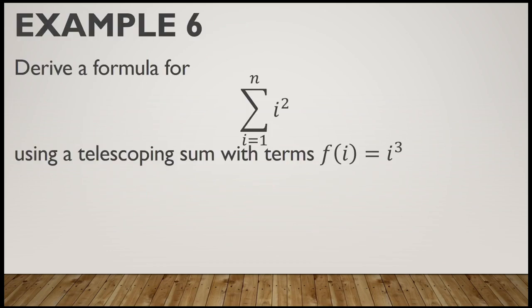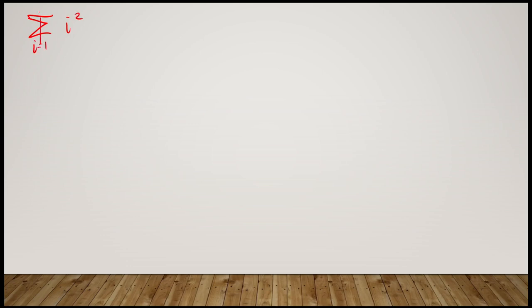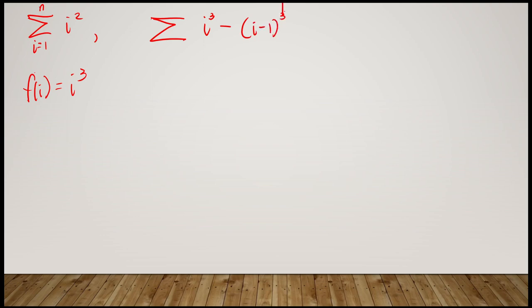Our next example: derive a formula for the summation of i-squared from i equals 1 to n, using a telescoping sum with terms f(i) equals i-cubed. Using the telescoping sum with f(i) = i³, we consider the summation of i³ minus (i-1)³ from i equals 1 to n. Since i and i-1 are consecutive and i is greater than i-1, we can apply the telescoping sum formula.